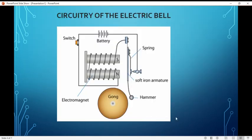This is the circuitry of an electric bell. The electric bell consists of a battery, a switch, an iron core which acts as an electromagnet when the current flows through it, a spring, a soft iron armature, a hammer, and a gong.